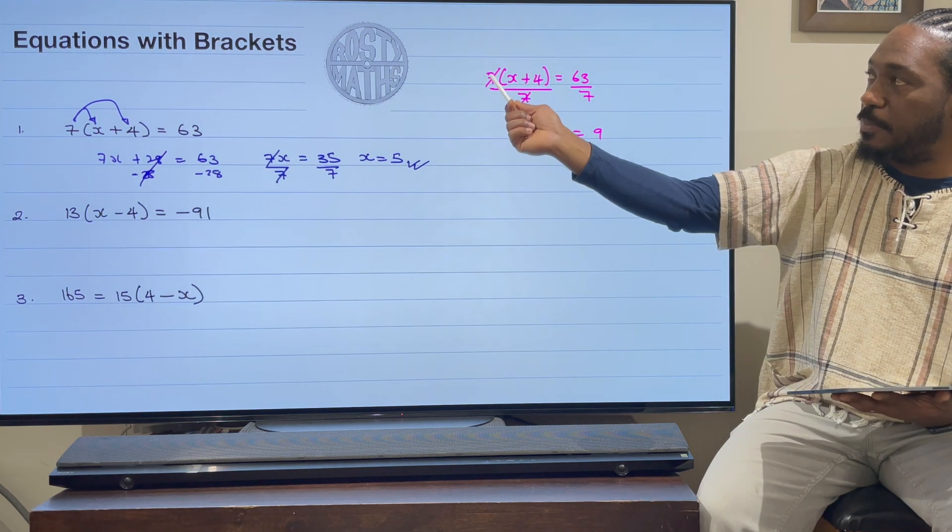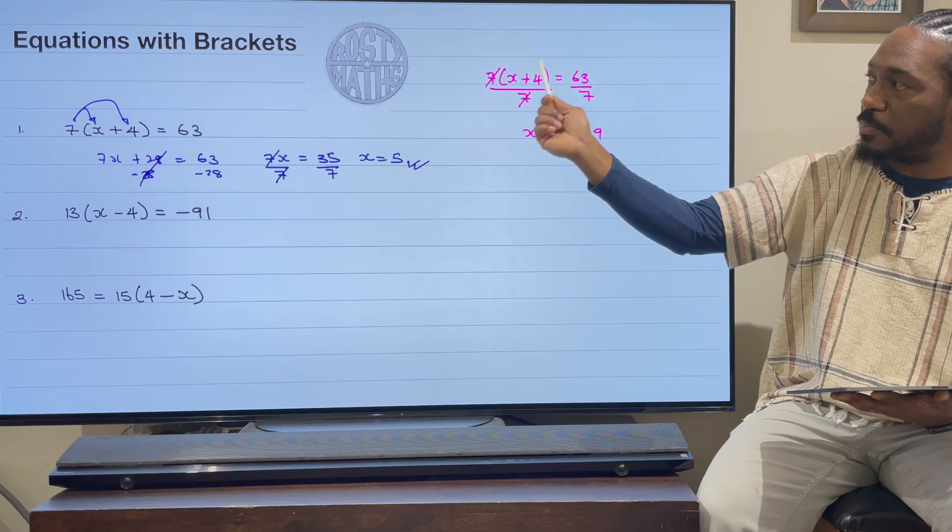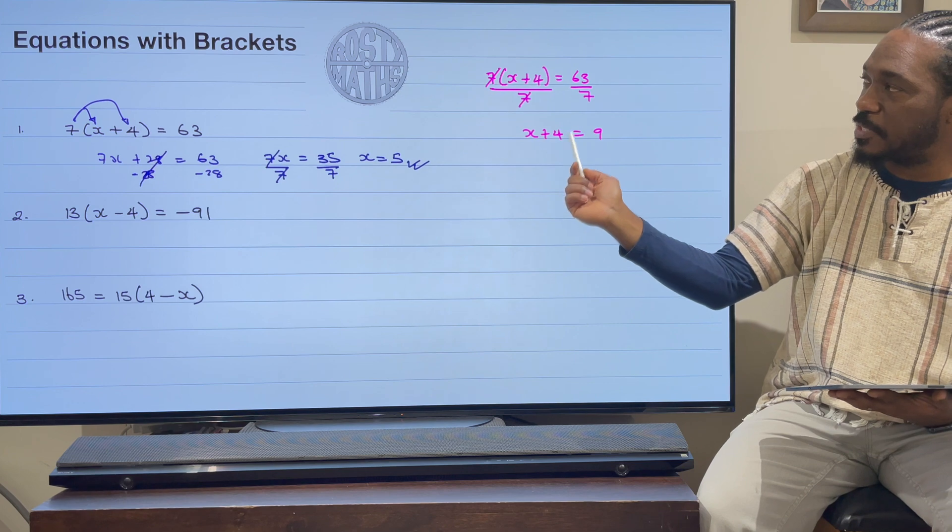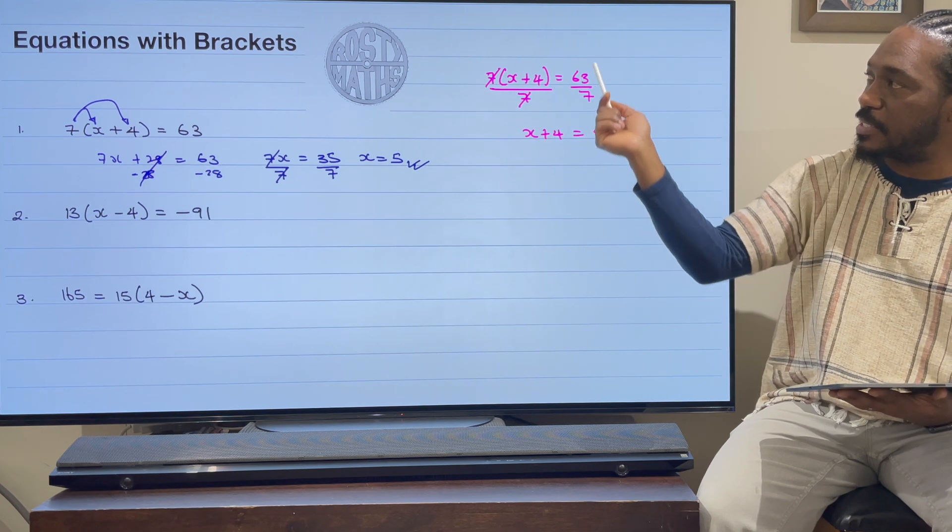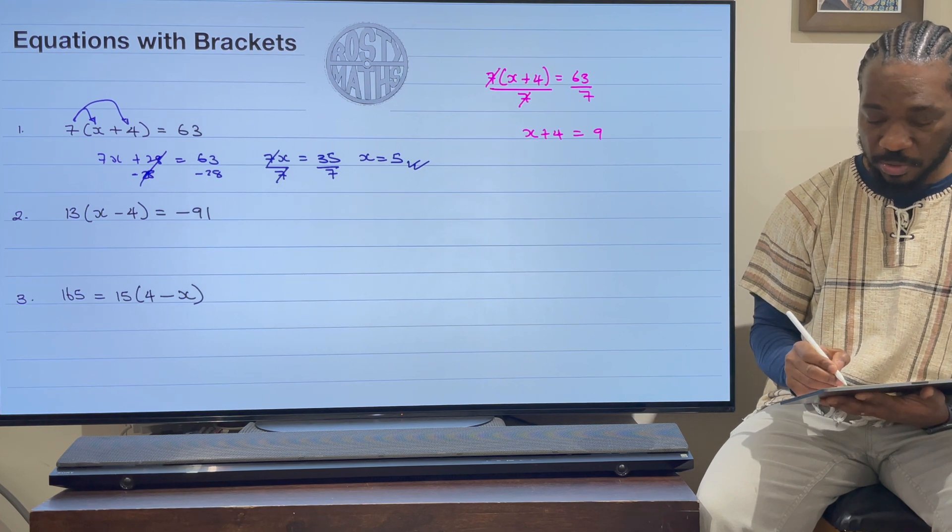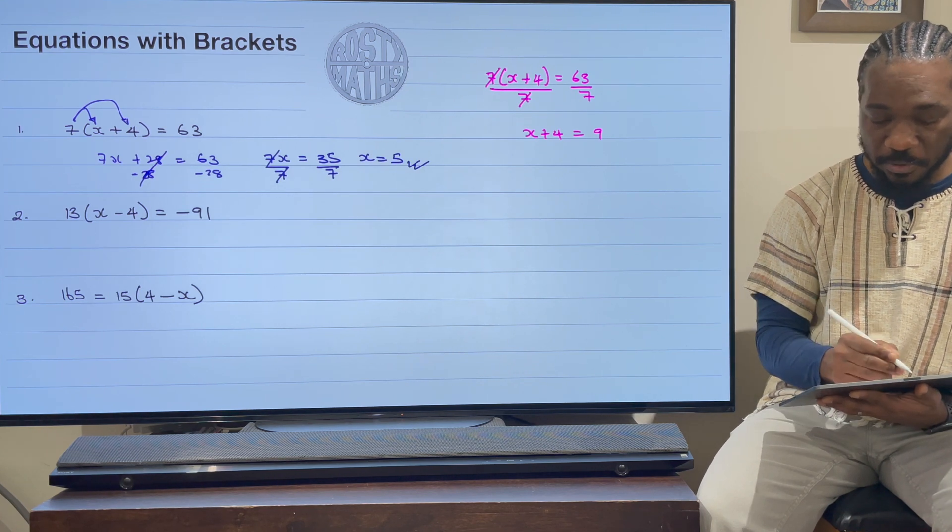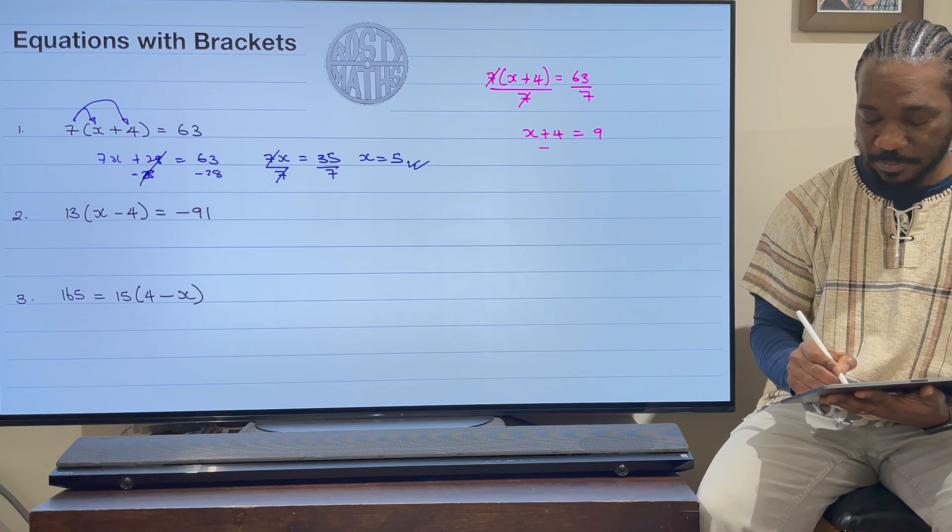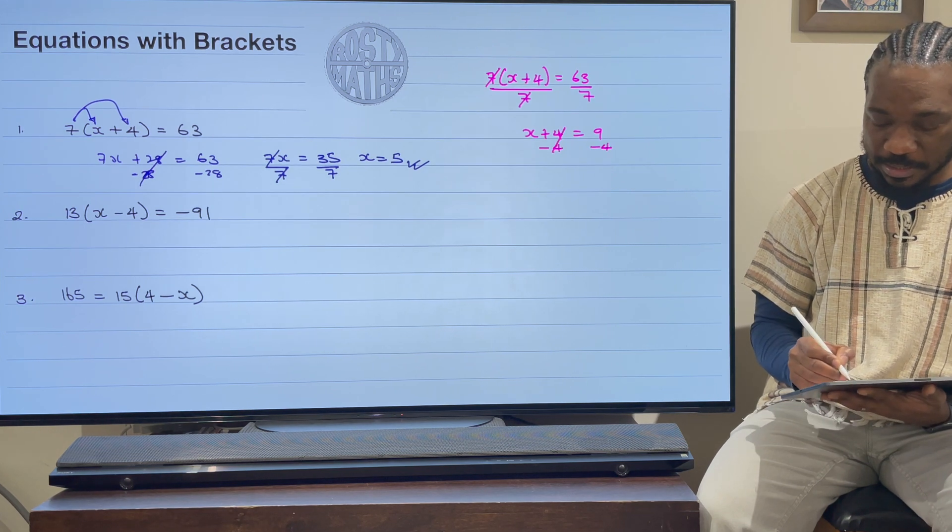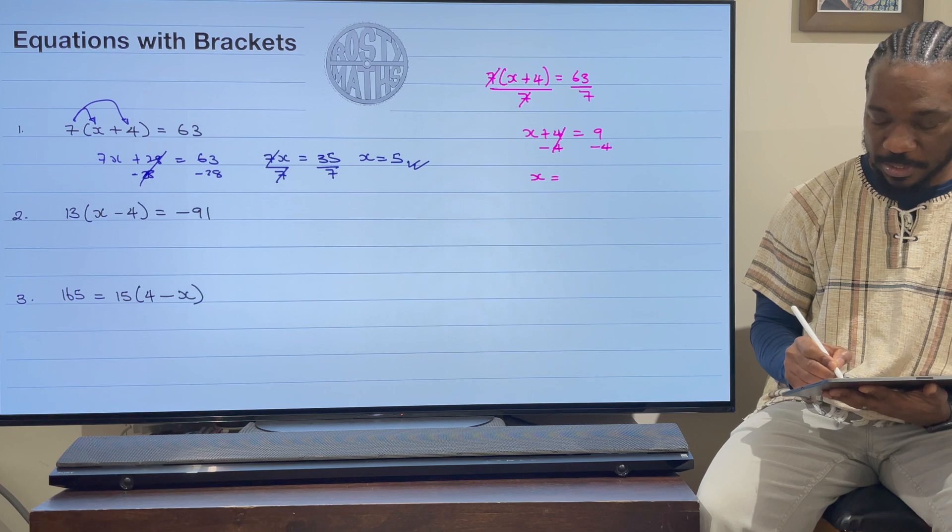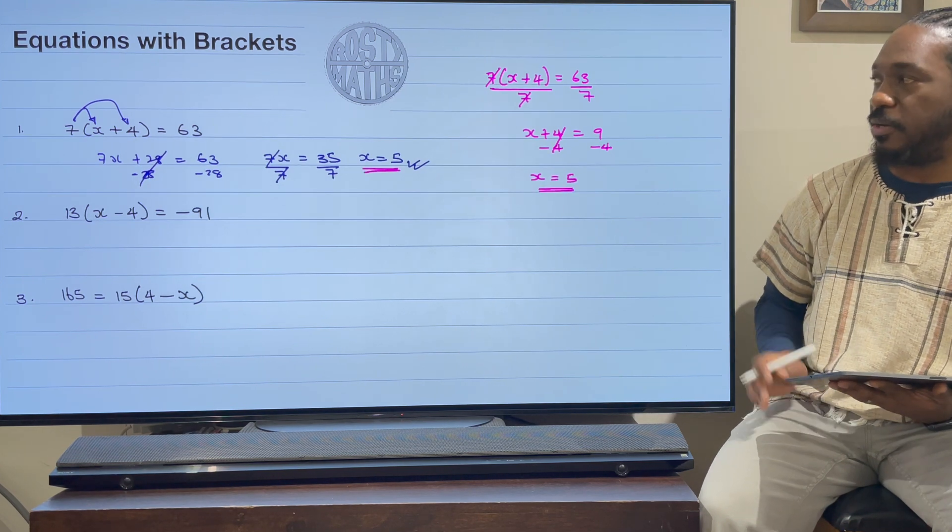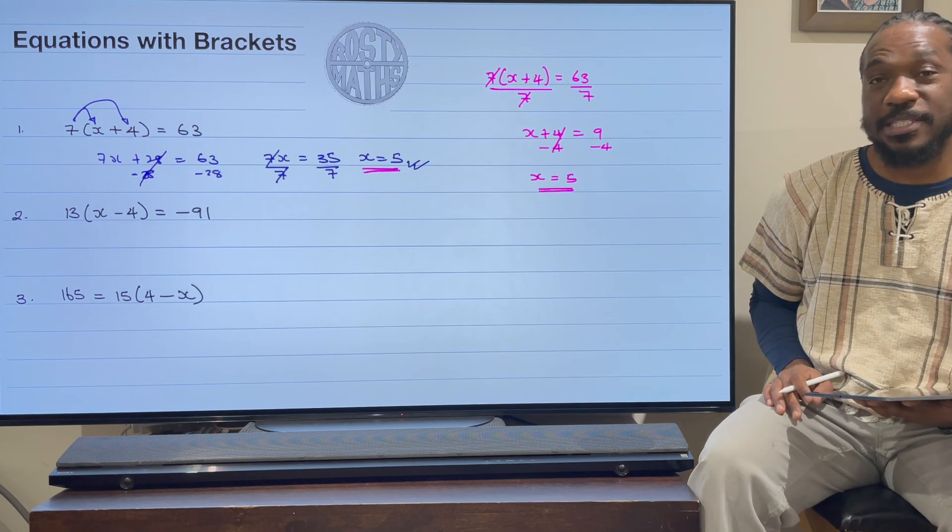As you notice, because I've divided by 7s, the brackets are now gone. And then all I've got left now is the x + 4 on the left side and 63 divided by 7 is 9. So I'll finish this off now by taking away 4 from both sides, because that's my inverse operation there. This cancels out, and then x will be equal to 5, just the same answer that we got over here.